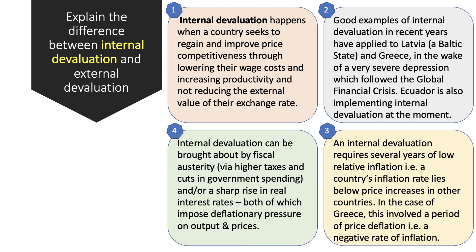How do you get there? Typically you need some pretty severe deflationary policies. Fiscal austerity — sometimes imposed by outside bodies — involves higher taxes and cuts in government spending and borrowing. Or perhaps the central bank decides to increase the real interest rate on loans. Higher interest rates and fiscal austerity both impose deflationary pressure on both prices and output.